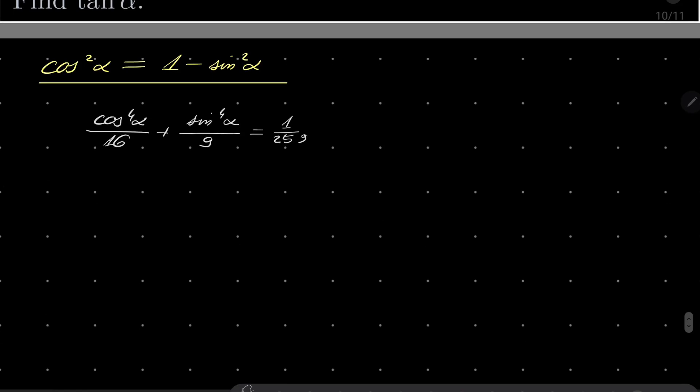We can multiply everything by 9 times 16 times 25. So 9 cosine to the fourth power of alpha plus 16 sine to the fourth power of alpha equals 9 times 16.